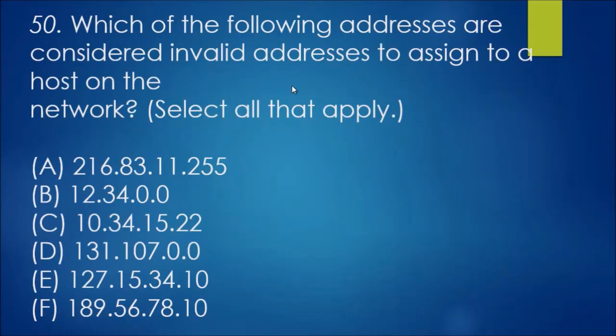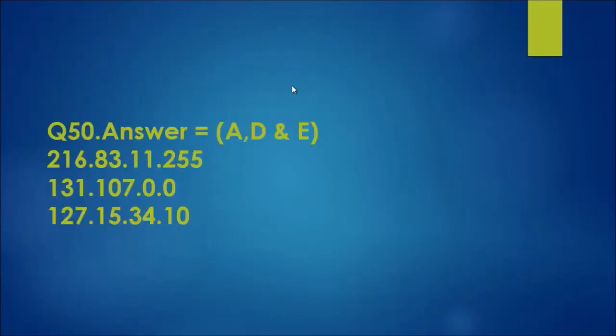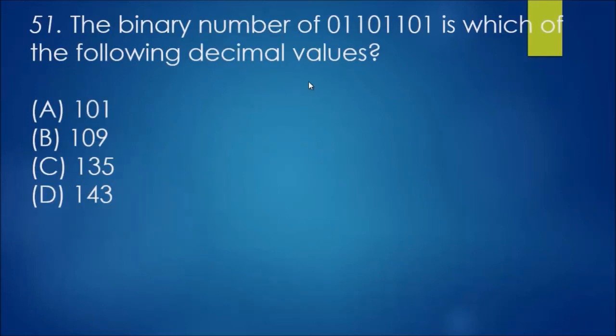Question 50: which of the following addresses are considered invalid addresses to assign to a host on network, select all that apply. We have private ones which are home internal local networks, which generally start off with 10.0.0.0, the 10 network. You have the 172 network, you have the 192 network. We'll just have a look at our list here and we'll find that A doesn't look great, D and E. So those addresses there, again you cannot assign a system IP address that starts with 127 dot whatever. You also cannot have a system where all the host bits are set to one, which is in the case of A, and all the host bits cannot be set to zero either.